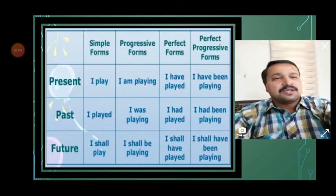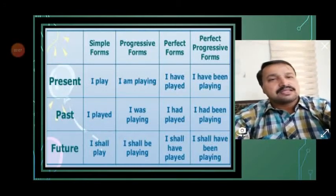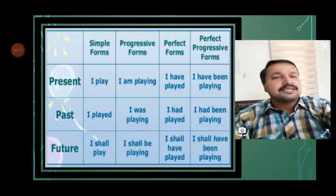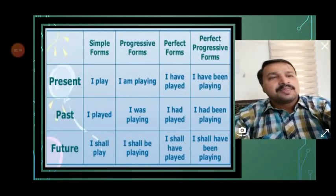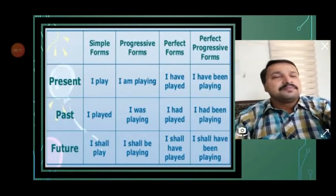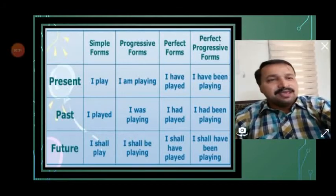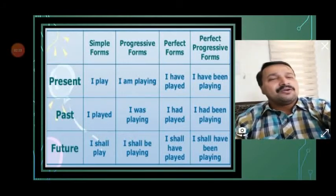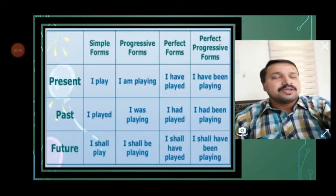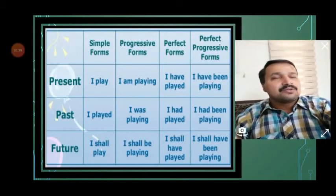In future tense, two auxiliaries are used: 'shall' or 'will'. Using 'shall': I shall play, we shall play — simple future. Using 'will': he will play, she will play, you will play, they will play. 'Will' or 'shall' can also be used with 'I' or 'we'.